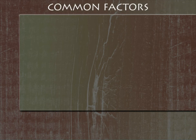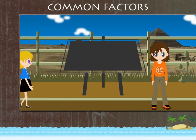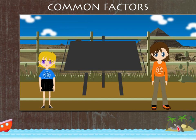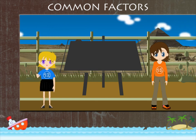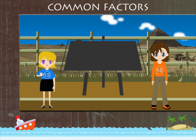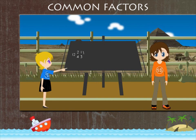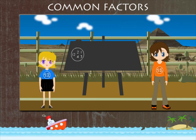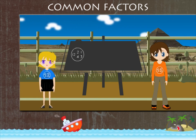Mini and Max stand with a blackboard to show common factors. Mini represents the number 12. The factors of 12 are 1, 2, 3, 4, and 12.